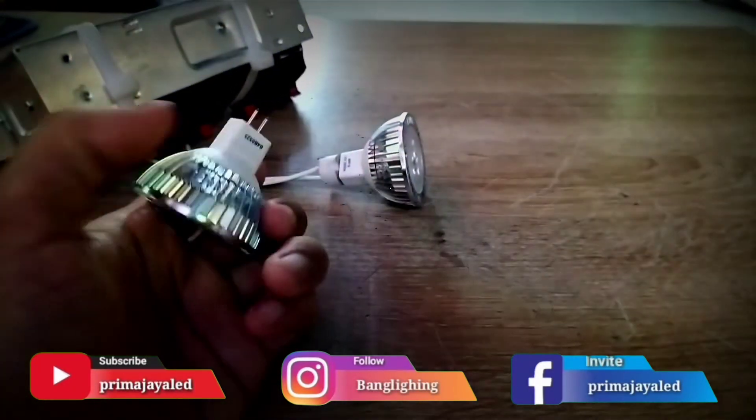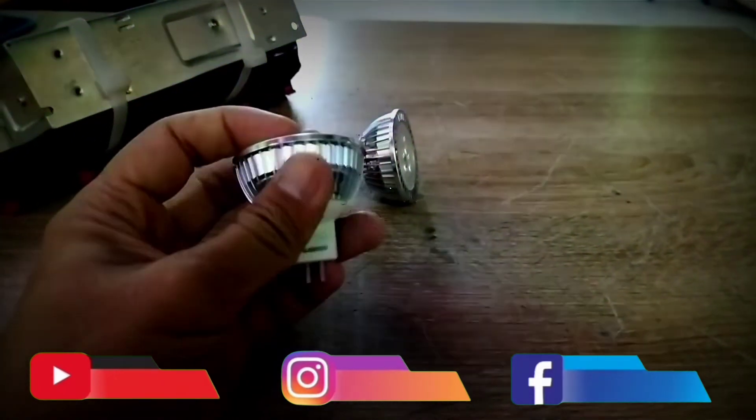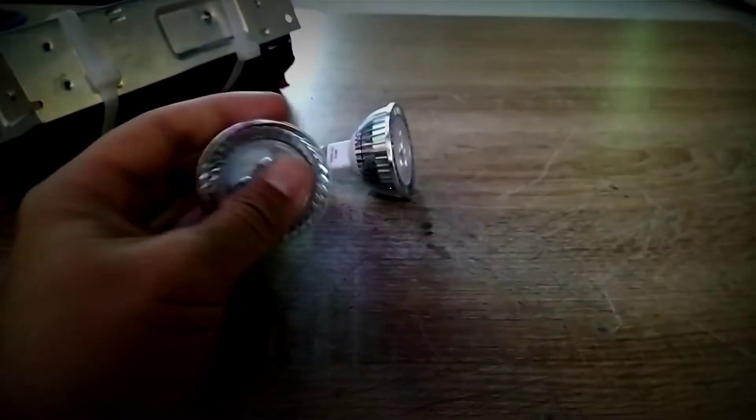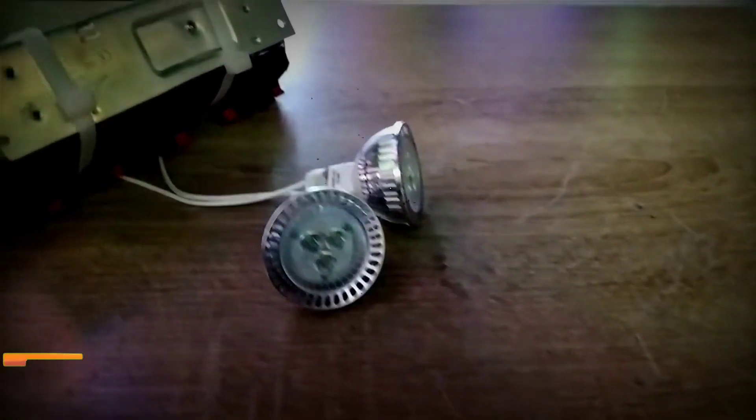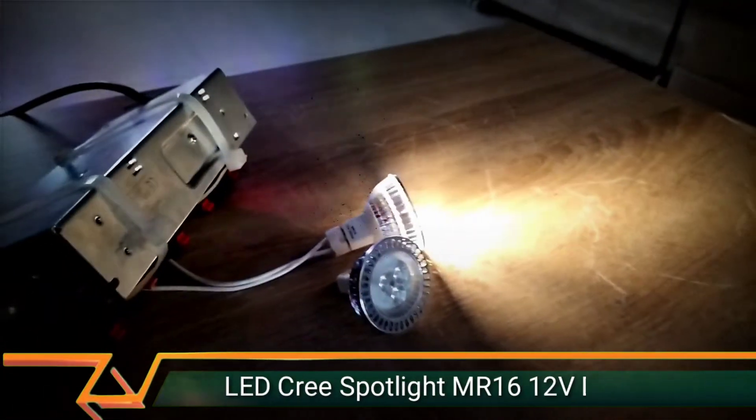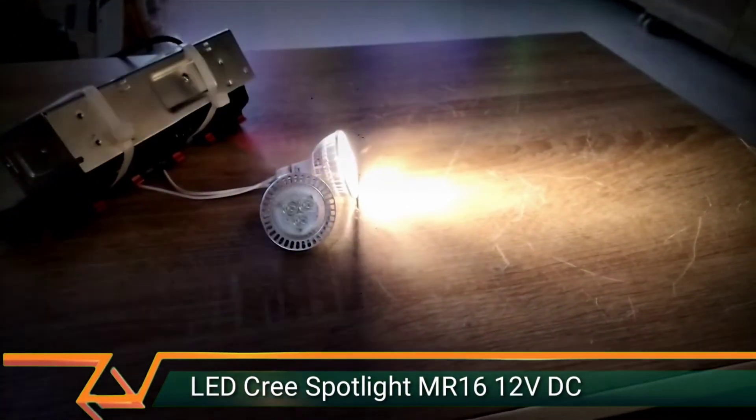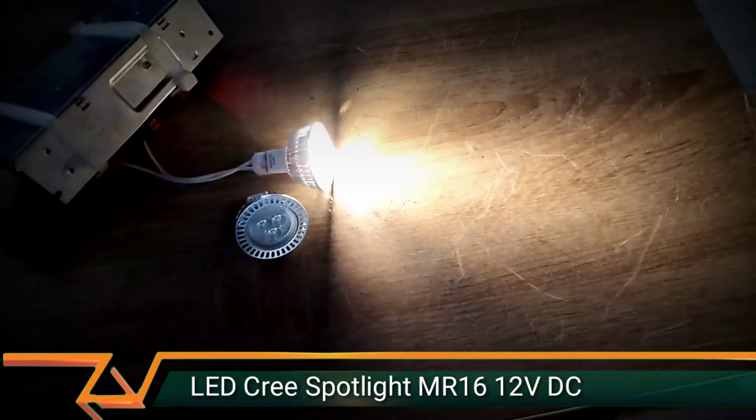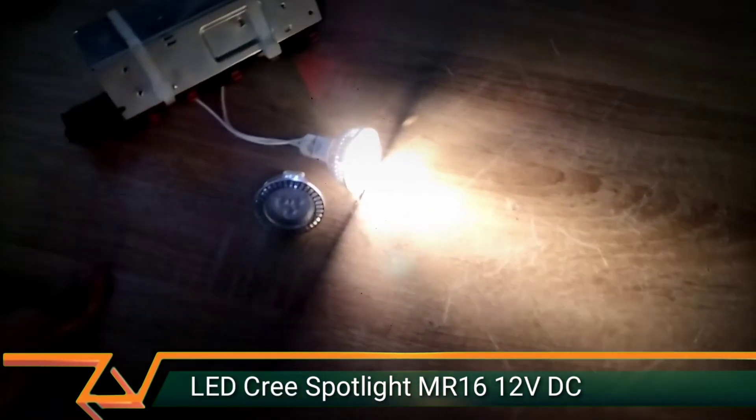Ini 12V, jadi butuh switching power supply, penggunaan bodi aluminium untuk pembuangan panas yang lebih maksimal. Tiga mata LED, cahaya warna warm kuning hangat di 3000 Kelvin dan cahaya warna putih di 6000 Kelvin.